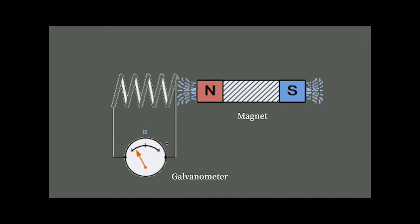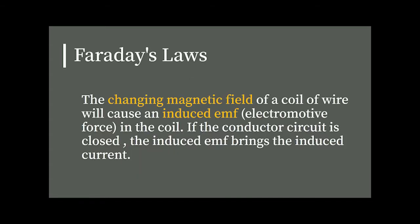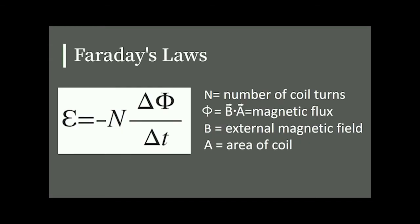In this slide, you can see a loop of coil, a magnet, and a galvanometer. The galvanometer is for measuring the induced EMF caused by the magnetic field change of a coil of wire. Obviously, the magnet on the right is providing a magnetic field change by moving forward and backward.